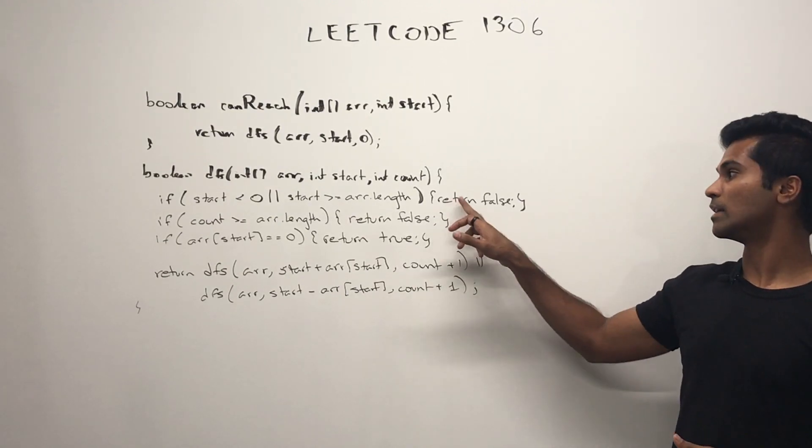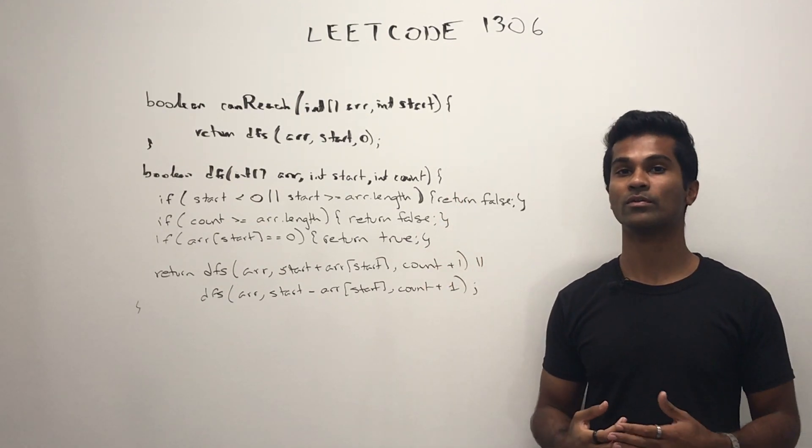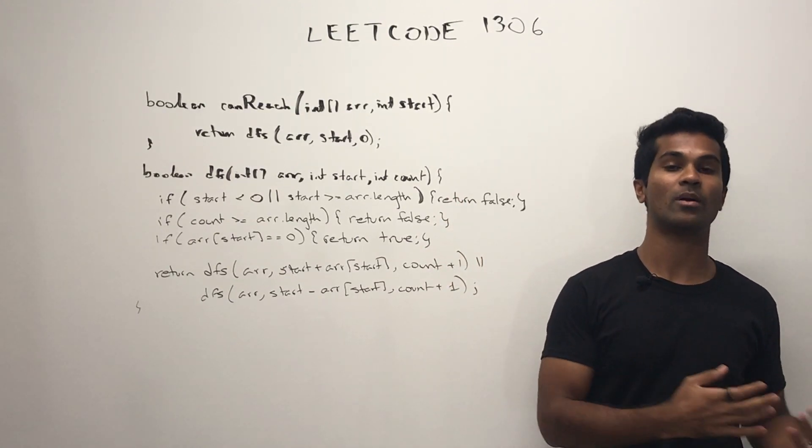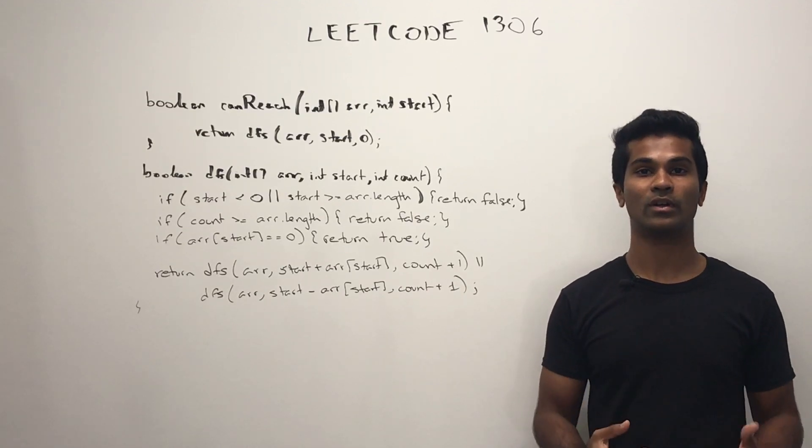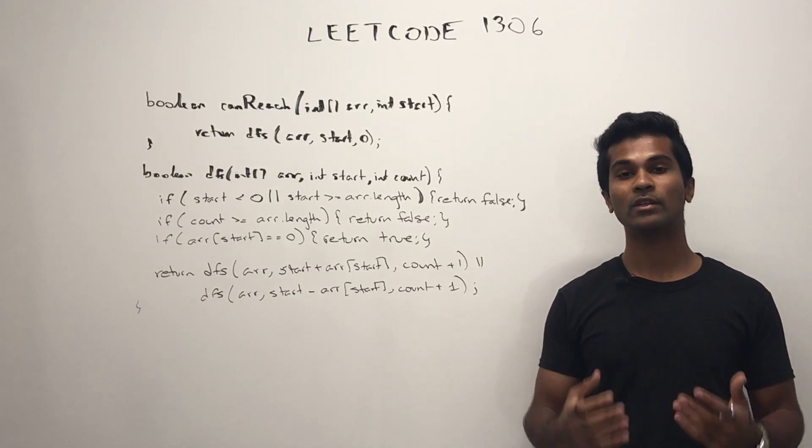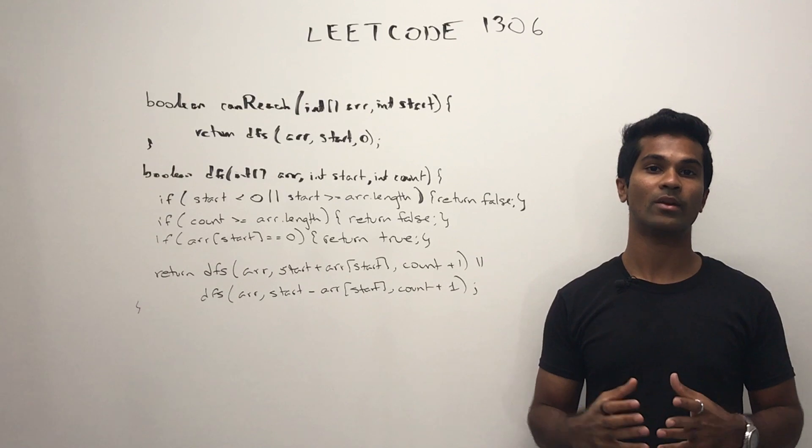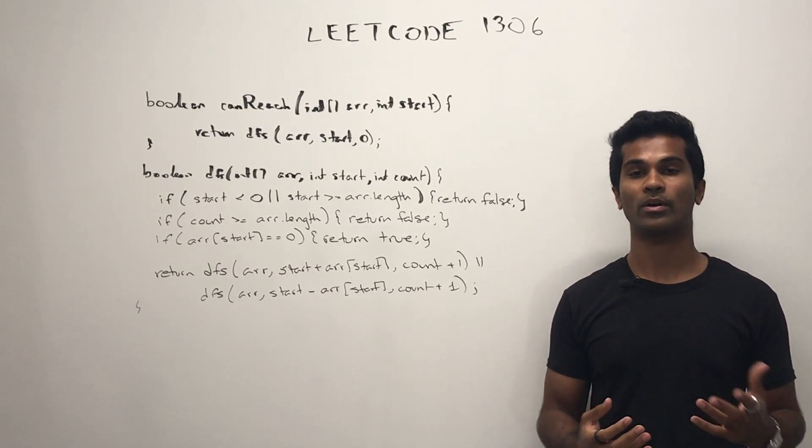Now, if we didn't have to hit any of these three if statements, then we recursively ask our left jump and right jump, hey, are either of you guys recursively true? If either of them is recursively true, then we can just return true and answer true to the whole question.